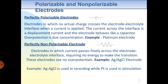Perfectly non-polarizable electrodes are electrodes in which current passes freely across the electrode-electrolyte interface, requiring no energy to make the transition. In the case of perfectly polarized electrodes we need energy, but for perfectly non-polarizable electrodes we do not need energy for transition. An example is the Ag-AgCl electrode. The Ag-AgCl electrode is used in recording, while platinum is used in stimulation.